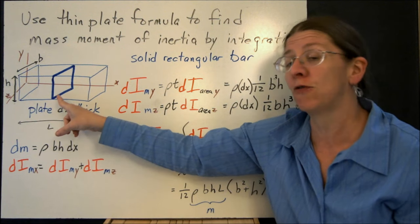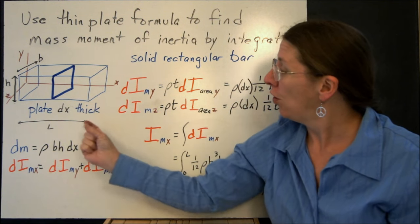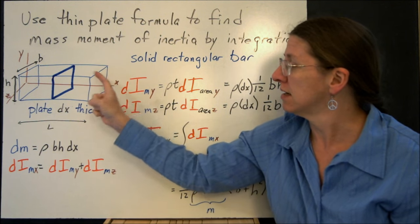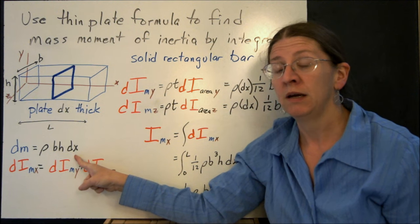So if I looked at this differential mass, so I've got a dm, which would be the density times b, which is this distance, and h, and then my thickness is dx.